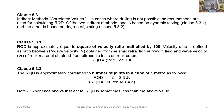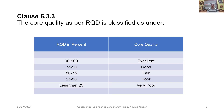Clause 5.3.2 states that RQD is approximately correlated to the number of joints per cubic meter Jv as follows: RQD = 115 − 3.3 Jv, and RQD = 100 for Jv less than 4.5. These two indirect methods are generally not used when direct drilling is possible, but they are used where you cannot directly drill boreholes in mountainous or rocky terrain. Note: experience shows that actual RQD is sometimes less than the above calculated value.